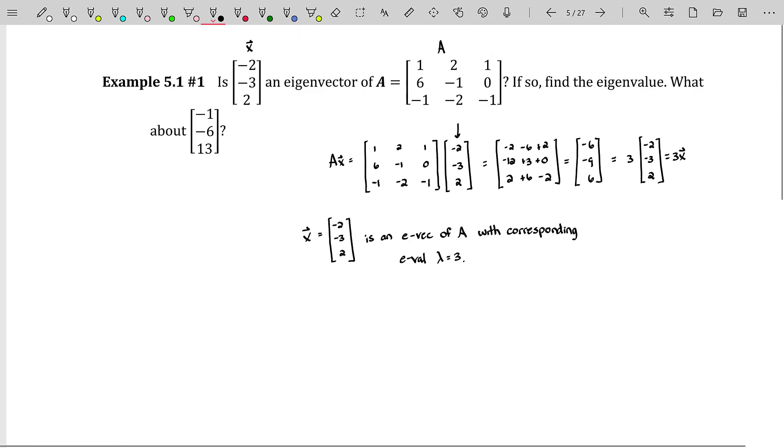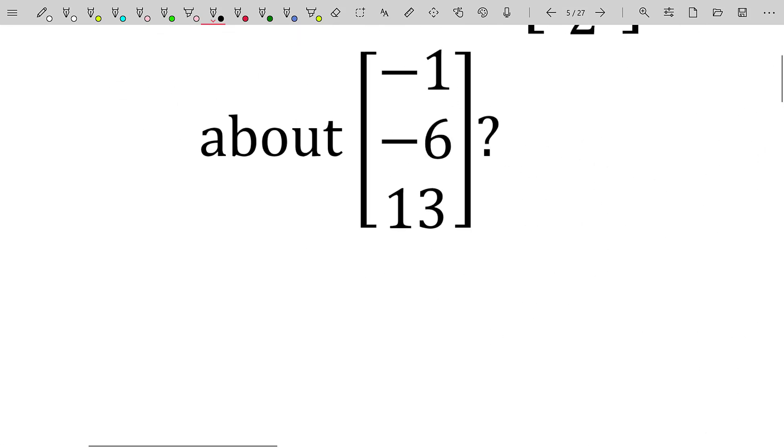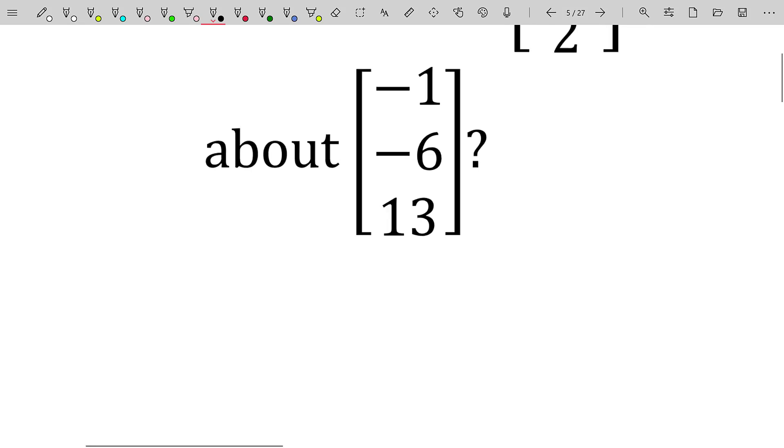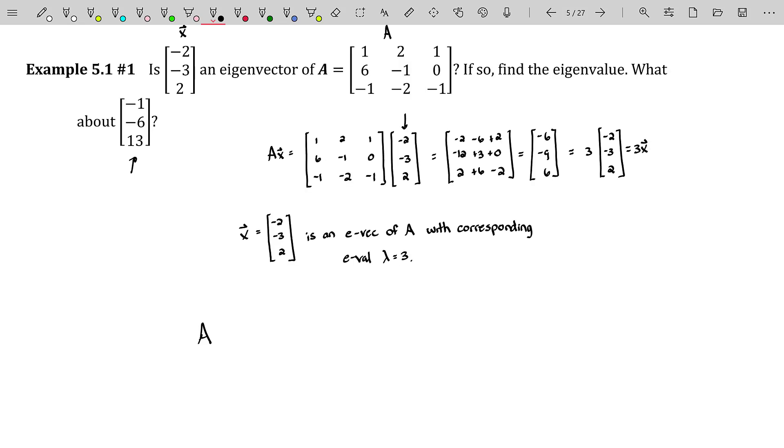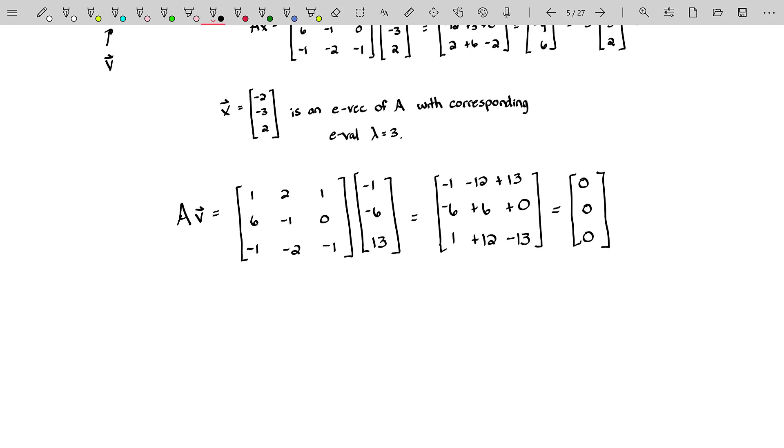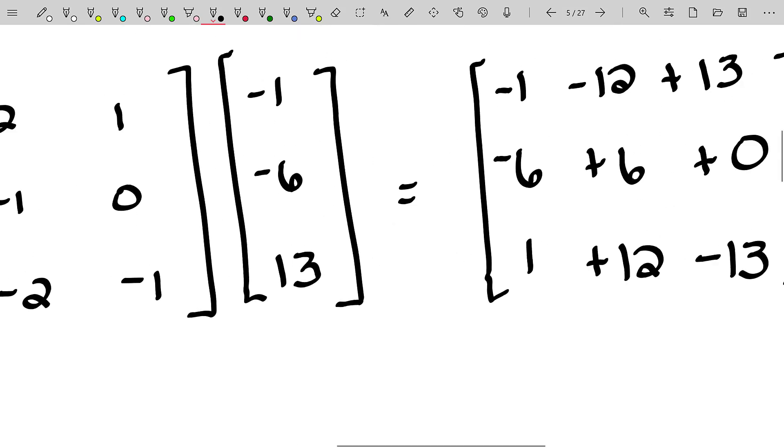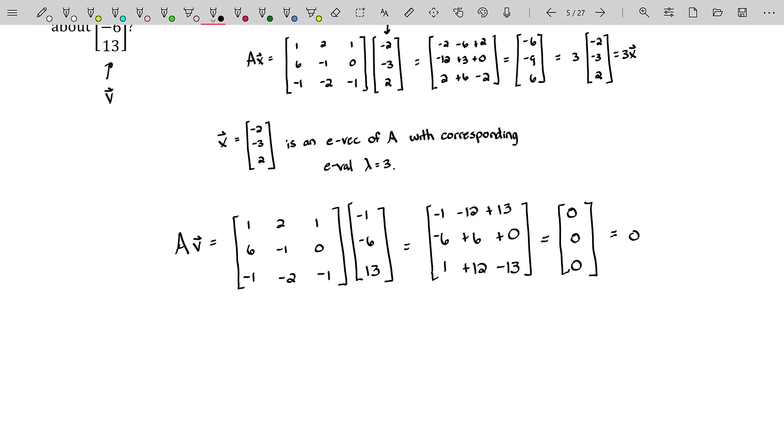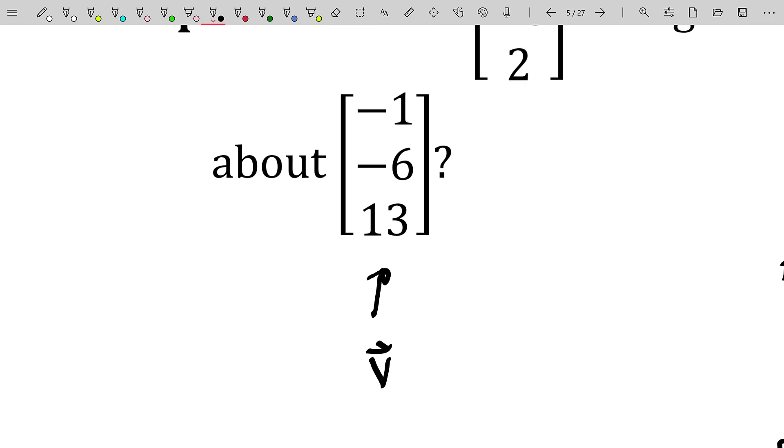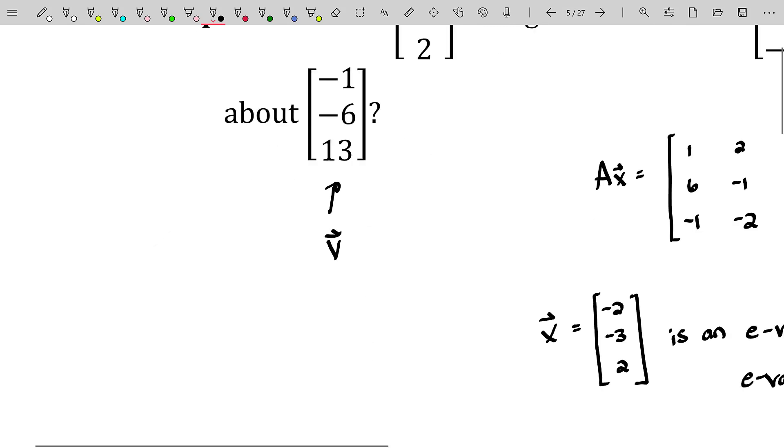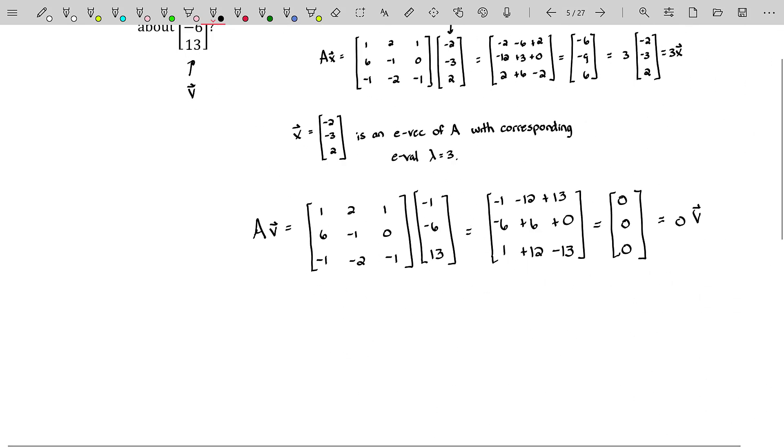Now, the last part of this question is asking, what about this vector right here? Negative one, negative six, 13. Is that an eigenvector for the matrix A? Okay. Well, let's find out. And I'll call this vector V. And looky here, you may say, wait, no, that's not a multiple of the original vector V, but it actually is. It is zero times the original vector V. So V is an eigenvector. Remember, eigenvectors have to be non-zero, but I never said anything about eigenvalues, did I? So eigenvectors are allowed to be non-zero or they're forced to be non-zero, but eigenvalues could actually be zero.